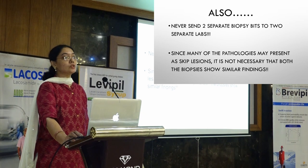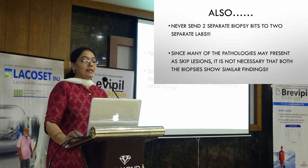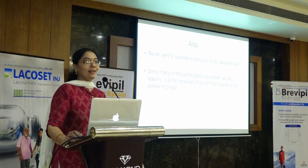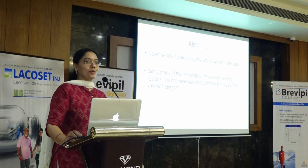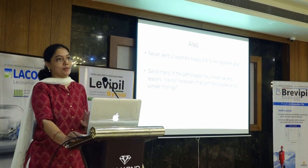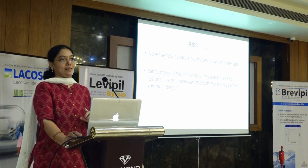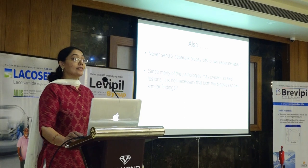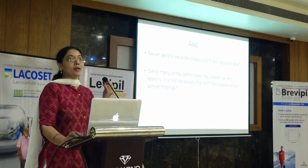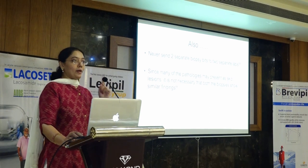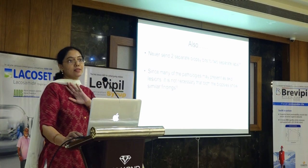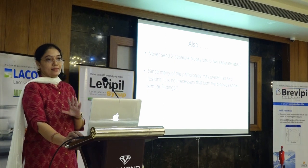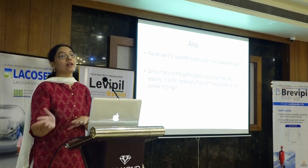Never send two separate biopsies to two separate labs. One biopsy will report a finding and the other lab will report no diagnostic pathology — it is not the mistake of the pathologist, it is the tissue that was sent. Instead, send one biopsy and get a second opinion by sending the same biopsy elsewhere. This did happen once — we had two nerve biopsies sent to us. One had frank vasculitis; the other, except for myelinated fiber loss, had nothing else. Had I received only the second one, I would have told chronic non-uniform axonopathy. But since vasculitis was present in the other bit, the diagnosis was vasculitic neuropathy.